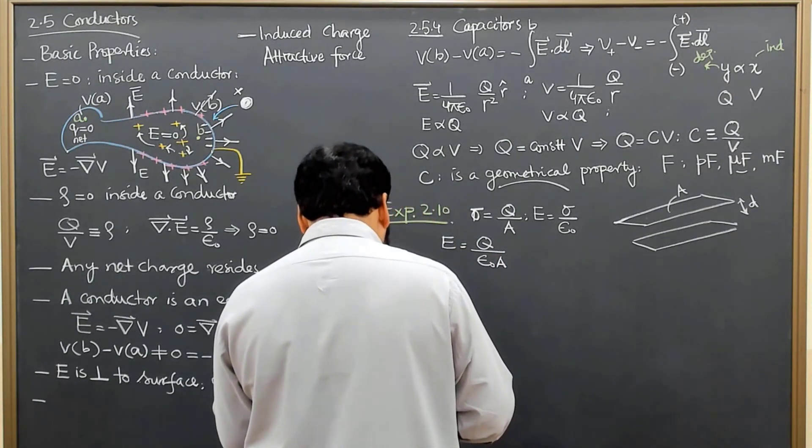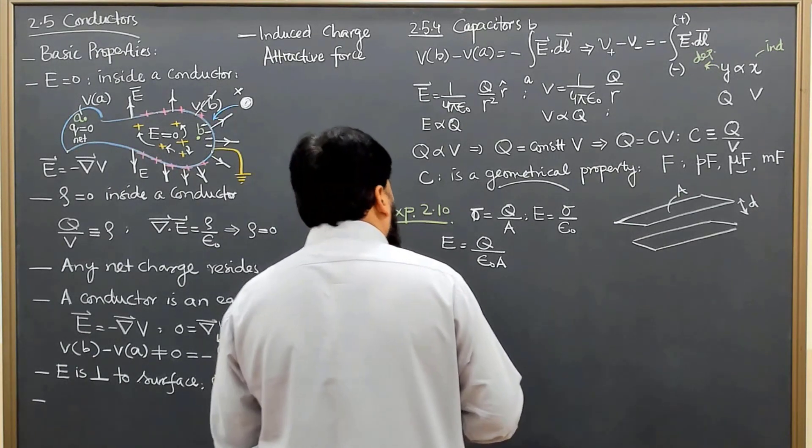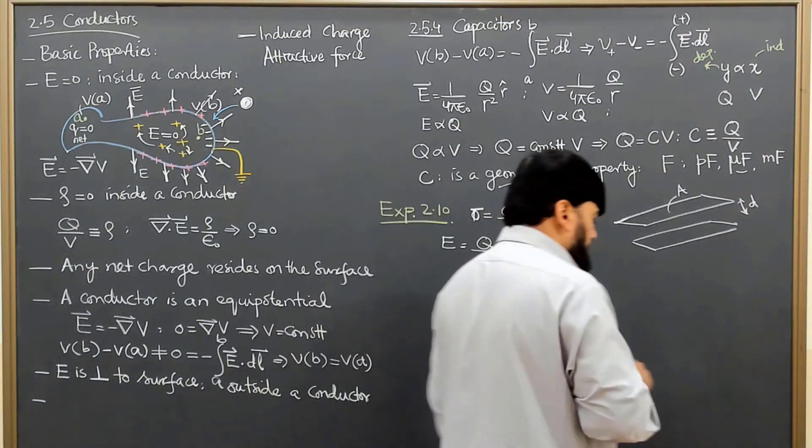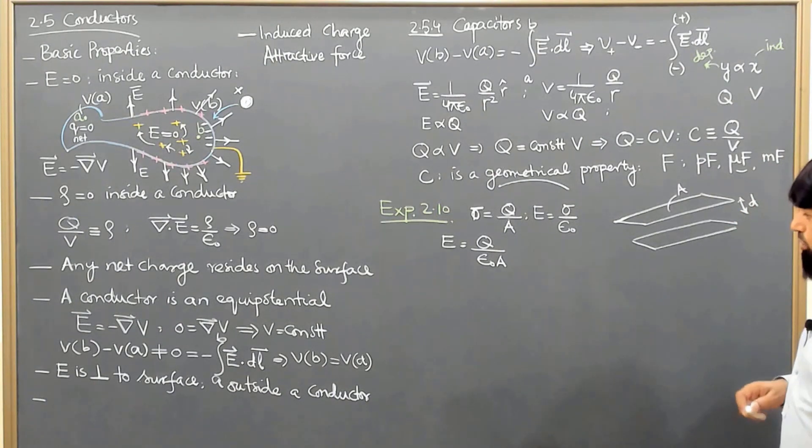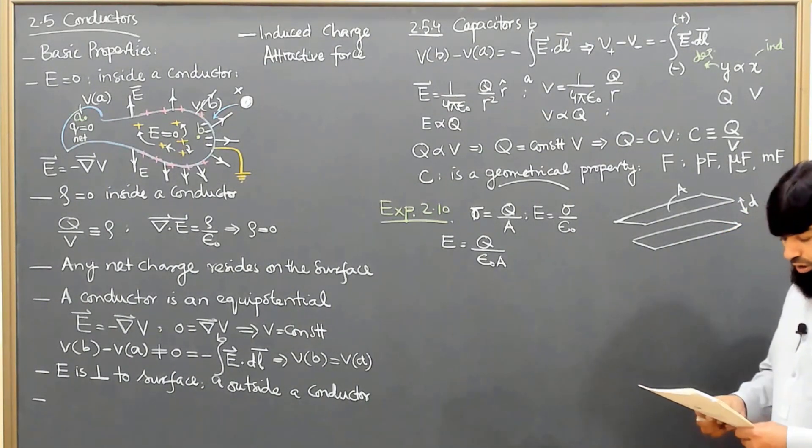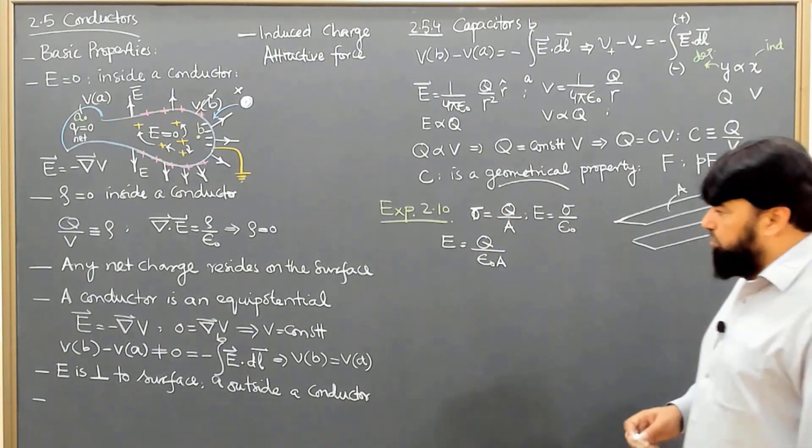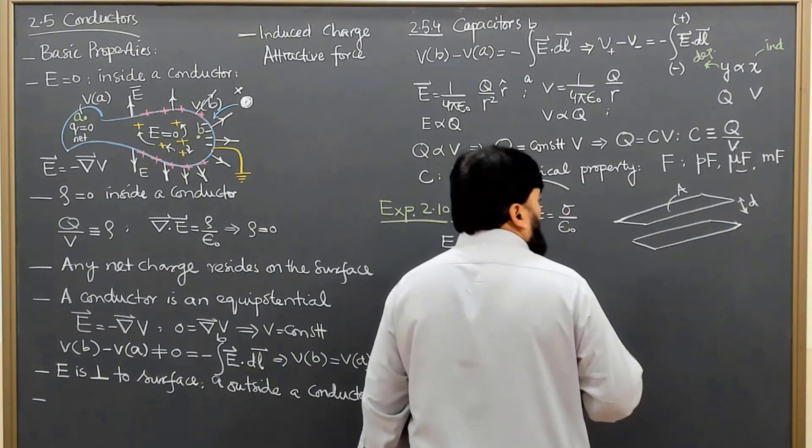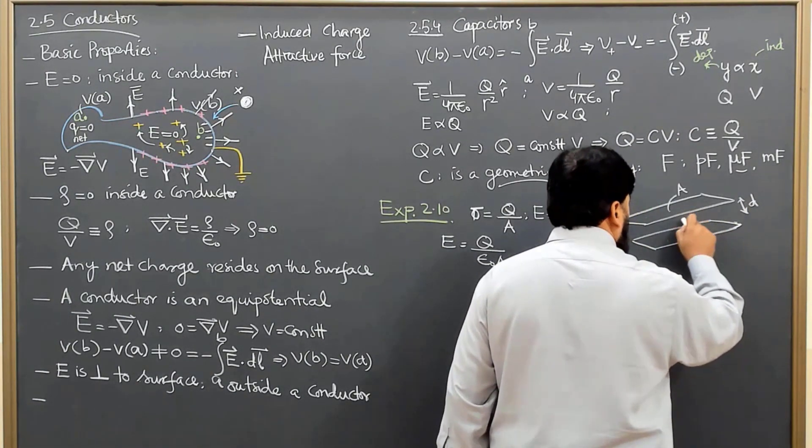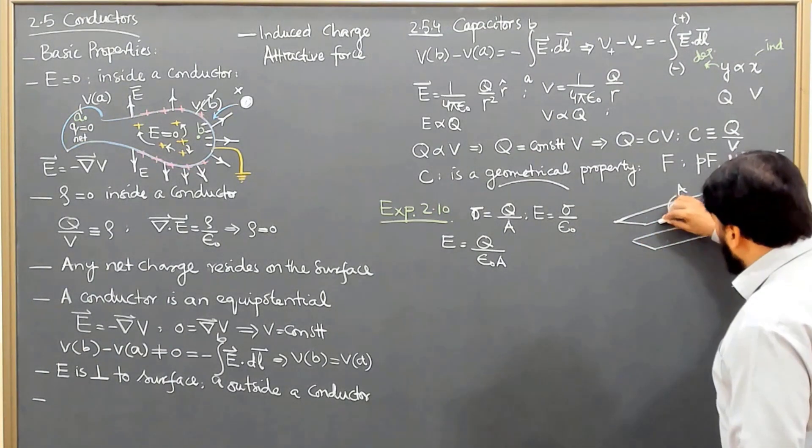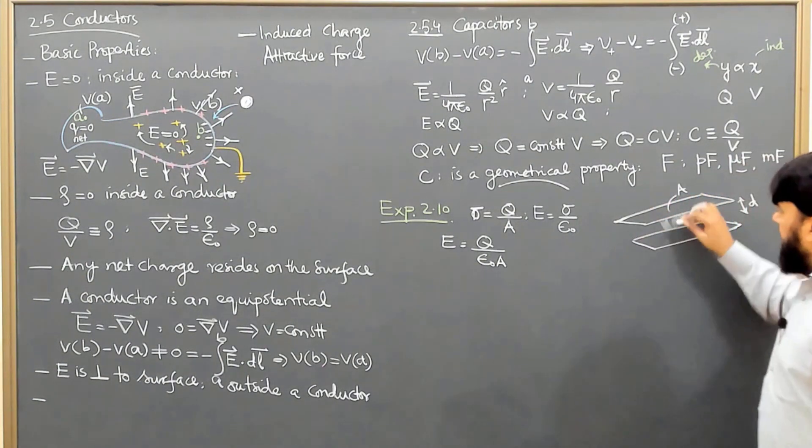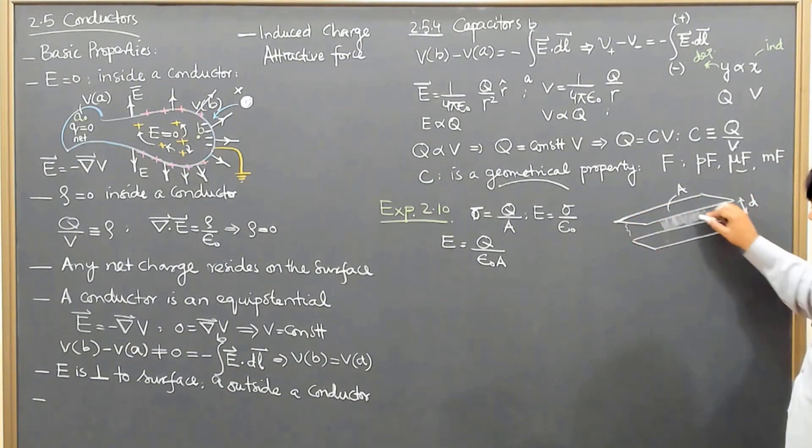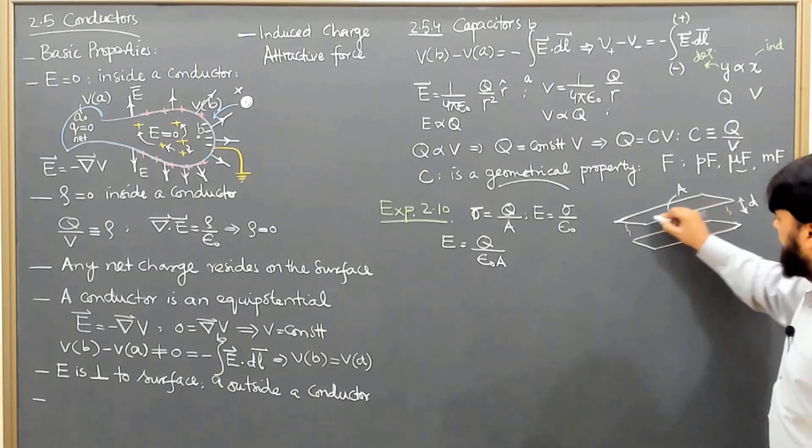What about the potential? The potential difference between the plates - they have separation D. If the capacitors are large enough, we consider the field in a small region and avoid the effect of fringes at the end. We have a uniform field in this direction with positive charges here and negative charges here.